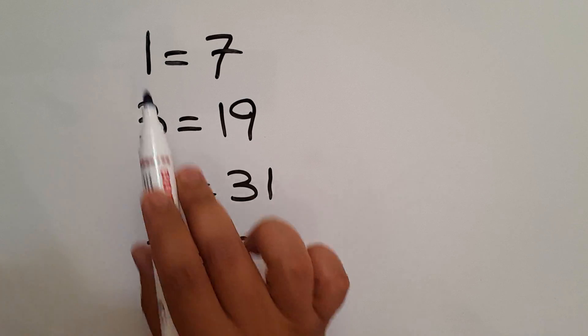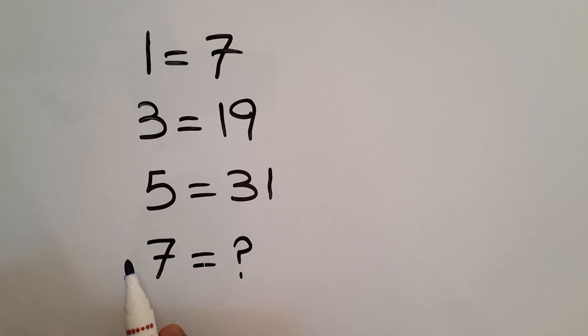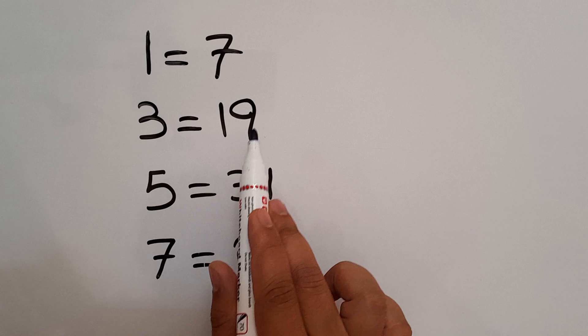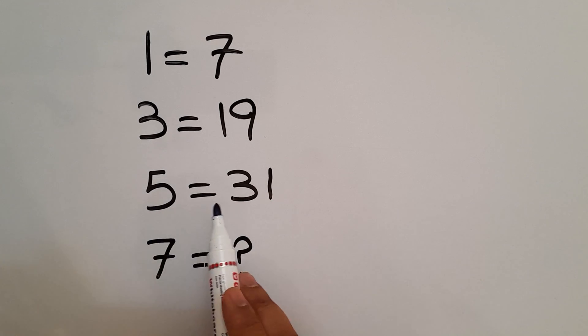Hey guys, welcome to Puzzle Joy. 1 equals 7, 3 equals 19, 5 equals 31, and 7 equals question mark. Our goal is to find the pattern that exists here and calculate the missing number.